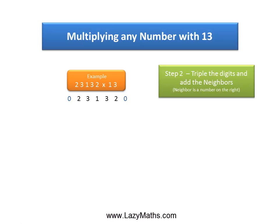The next step is to triple the digits and add the neighbors, the neighbor in this case being the digit on the right side. We'll do this process in pairs starting from the right side.